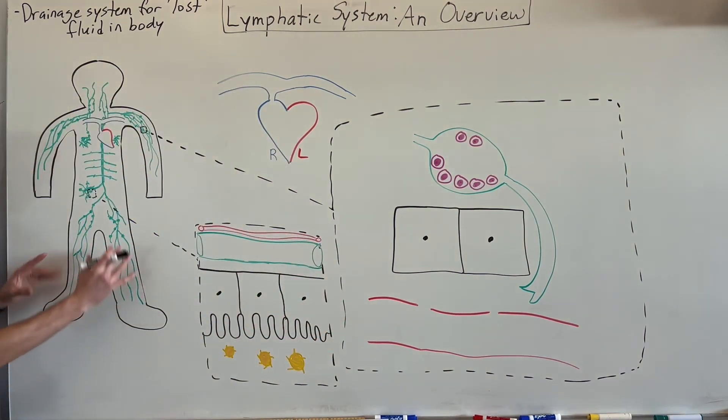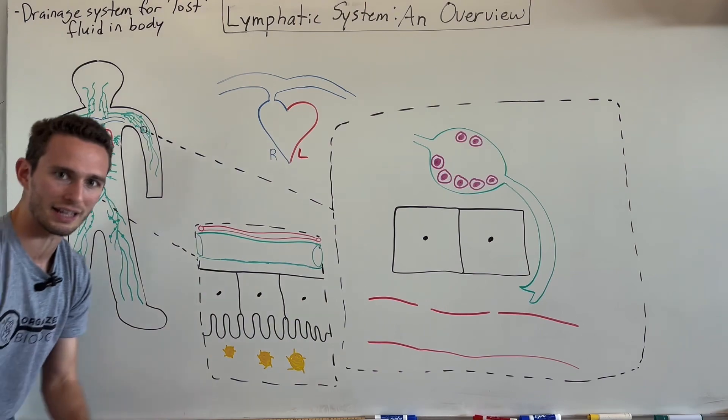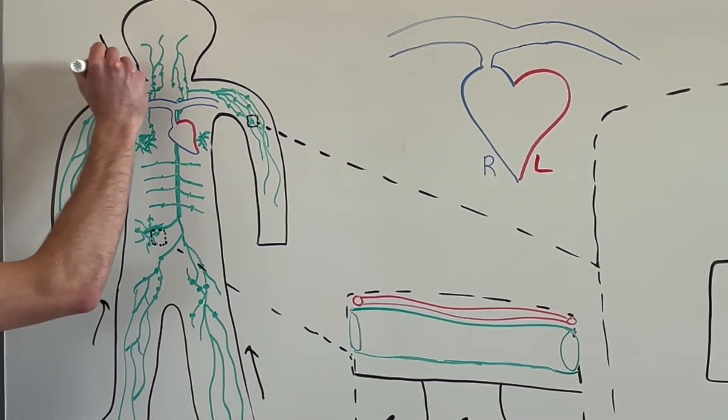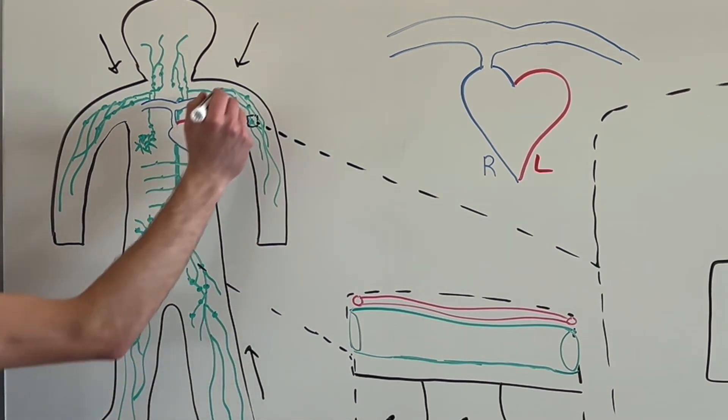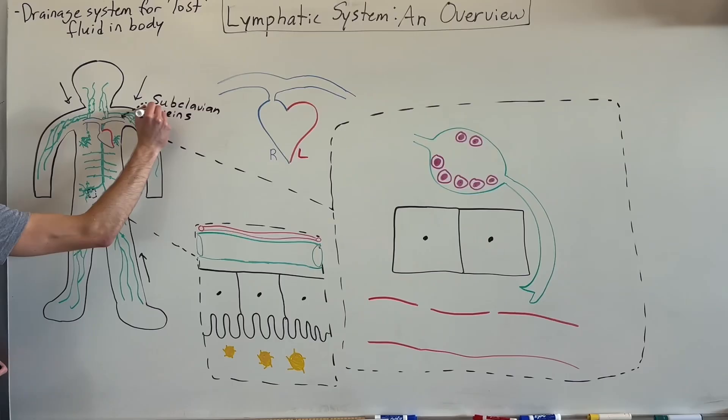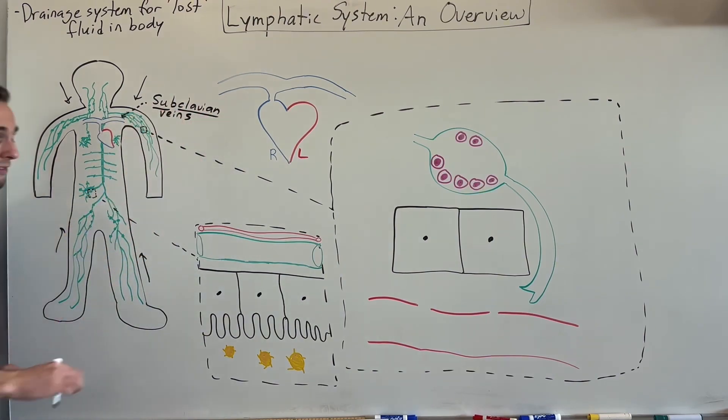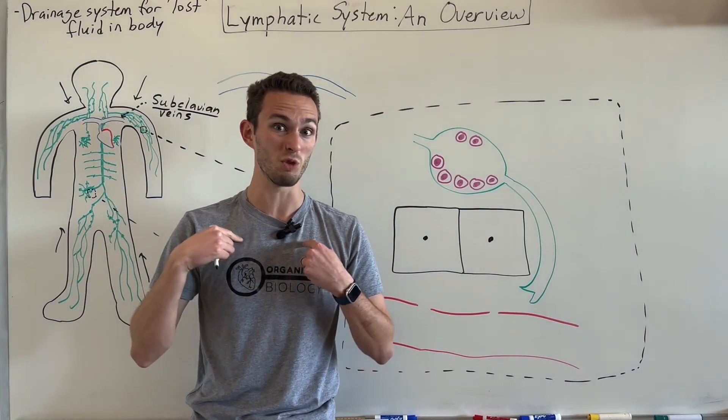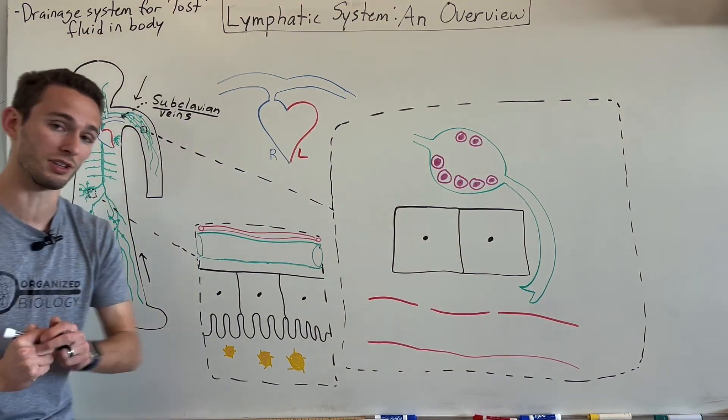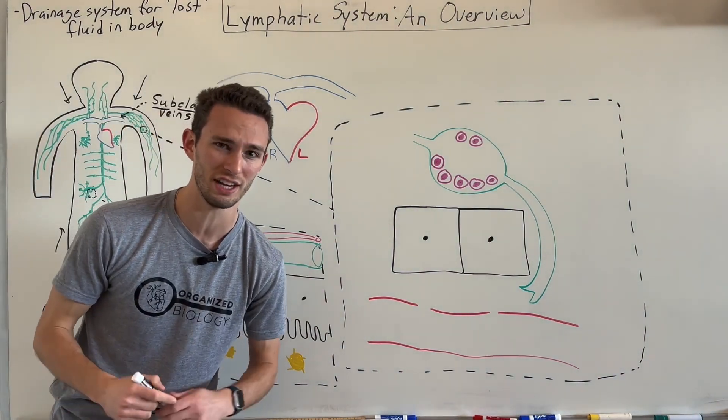So, if you look at the lymphatic system, all of these vessels are scattered throughout your body. And what they're going to do is they're going to drain in a one-way direction back towards some major veins. And these guys right here are called your subclavian veins. Subclavian means below the clavicle. So, right below here, you actually have really big veins that drain back into the right side of the heart before getting to the lungs and then back into general circulation.